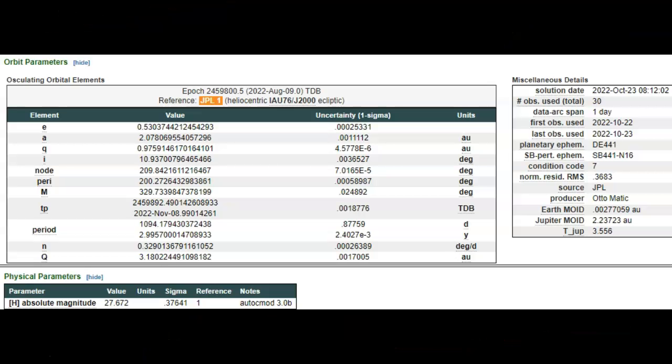So, as you can see by the solution date, October 23, 2022, that is today. Data arcs band one day. They're giving us just a few moments notice. Tomorrow is the 24th, right? So, a little over 24 hours notice. Again, a problem I have. Condition code 7. Zero being they know where it's going. Nine being they're highly uncertain to where it's going.